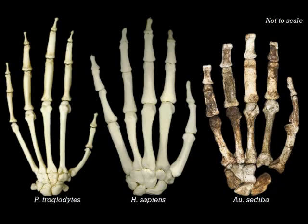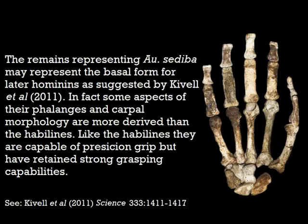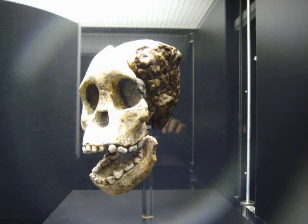Moving over to the gracile side of the family tree, the less robust afarensis descendants include the recently described Australopithecus sediba, which is another contender for the ancestor of our genus. This species is fairly primitive cranially, but does show several derived features in the hips and hands, which in some ways are more derived than Homo habilis.